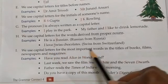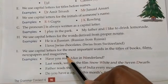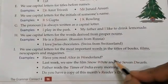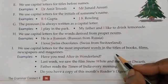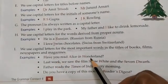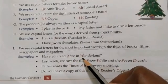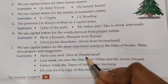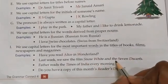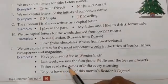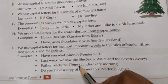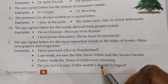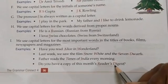We use capital letters for the most important words in the titles of books, films, newspapers, and magazines. The first letter of those important words is capital. For example, 'Have you read Alice in Wonderland?' — Alice in Wonderland is a book title, so A and W are capital. 'Last week we saw the film Snow White and the Seven Dwarfs' — S, W, S, and D are capital. 'Father reads the Times of India every morning' — Times of India is a newspaper, so T and I are capital. 'Do you have a copy of this month's Reader's Digest?' — Reader's Digest is a magazine, so R and D are capital.